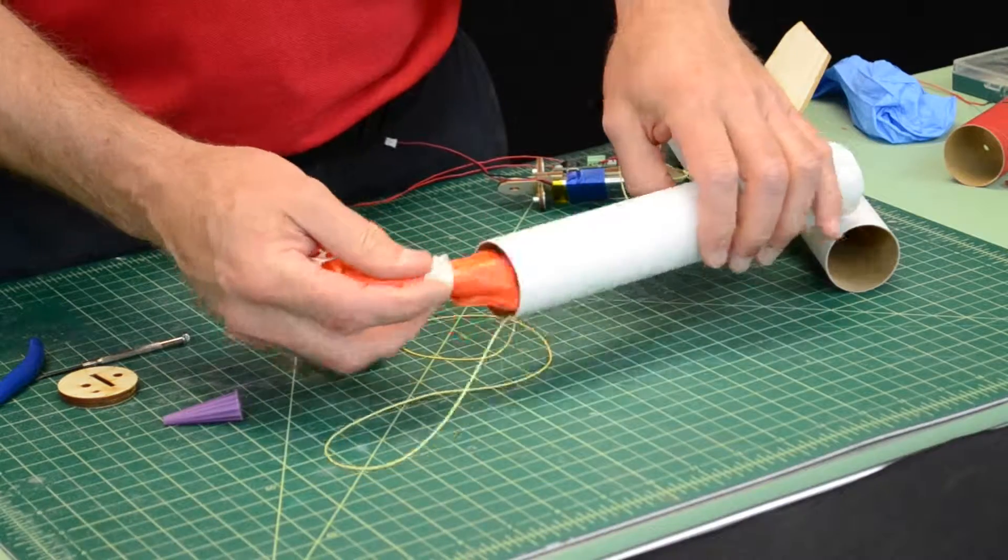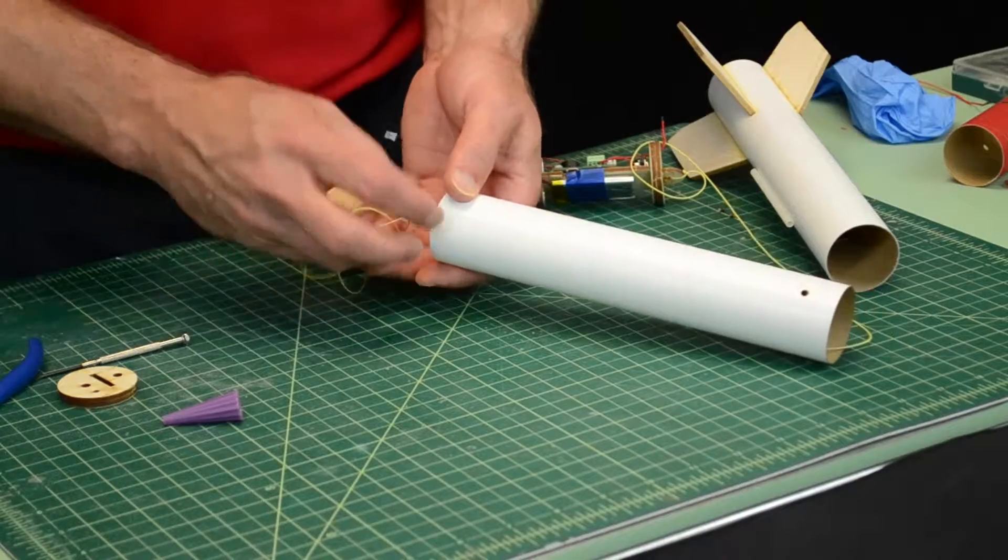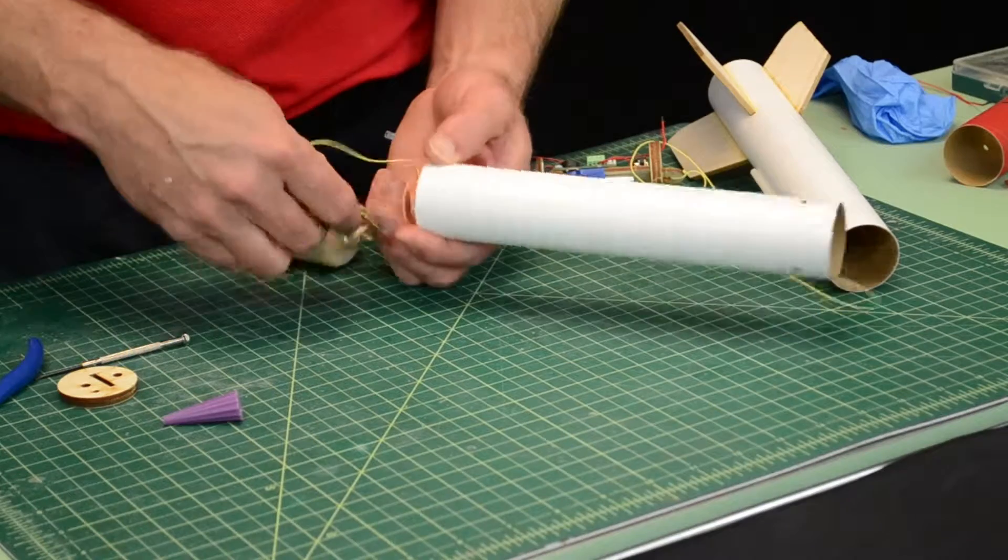And this is going to go inside the tube. Now you're going to want to put recovery wadding in the bottom end of the tube, because that's where there's going to be an ejection charge.